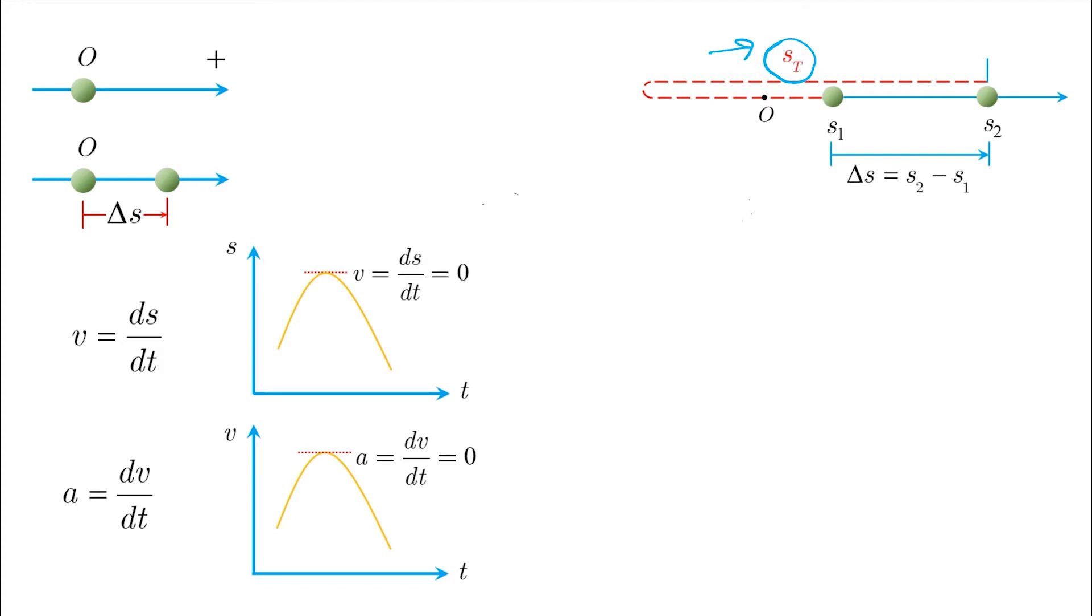And here we end up with two definitions. The average velocity, defined as the displacement covered in a certain time delta t, which is a vector quantity. And the average speed, defined as the total distance covered in the same delta t, which is a scalar quantity.